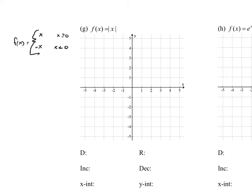Let's just think of some numbers. If I plug in 0, the absolute value of 0 is 0. Any positive number behaves exactly like y equals x — you get the number out. So for instance: 1,1; 2,2; 3,3; 4,4; and 5,5. That's the absolute value of x when we have positive numbers and 0.